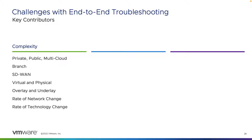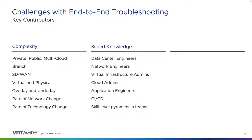When it comes to network complexity, we can all appreciate that networks are becoming more and more complex. We have virtual and physical devices mixed together, private, public and multi-cloud, and software-defined everything. On top of this, the rate of network and technology change is ever increasing. Closely related to complexity is the fact that we have many different teams defining and supporting the intent of the network, each with their own knowledge, ownership, and tool sets.